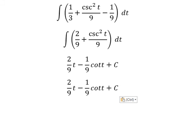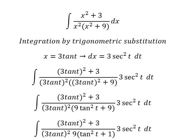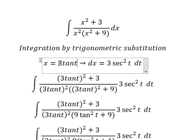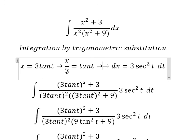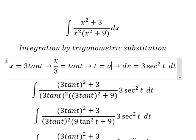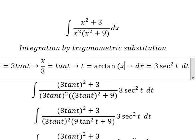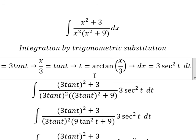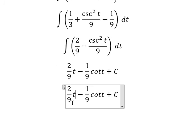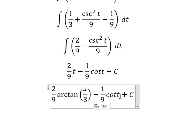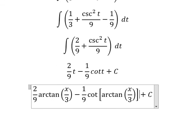For t, we need to go back in here. So we divide both sides with number 3, and we got about t equals to arctan of x over 3. So we put this one in here. This is the end. Thank you for watching.